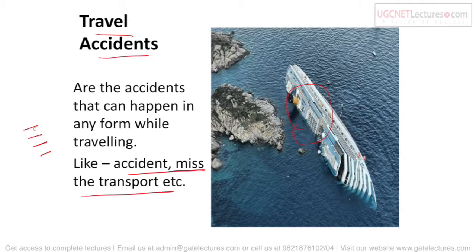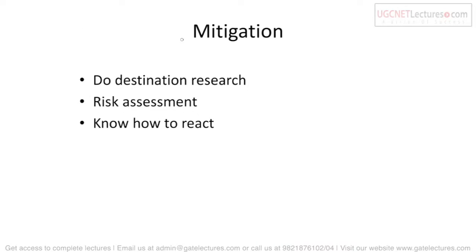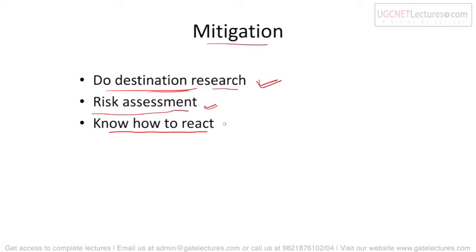To protect from travel accidents: do destination research before going anywhere — know what the place is like and what is there. Conduct a risk assessment — if you are traveling to a high-risk area, know what risks exist. Know how to react if an accident occurs — for example, if your passport or luggage is lost, know where to go and whom to contact.